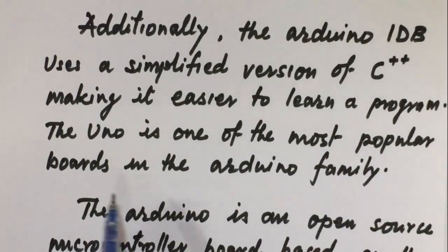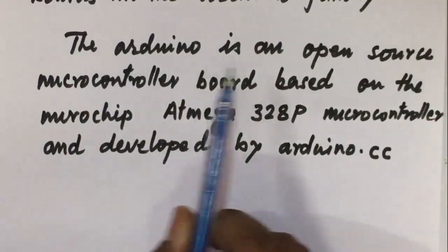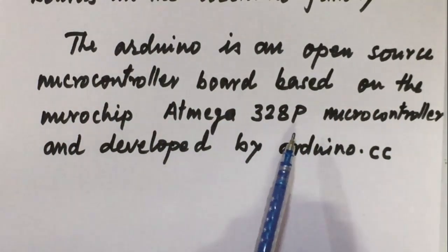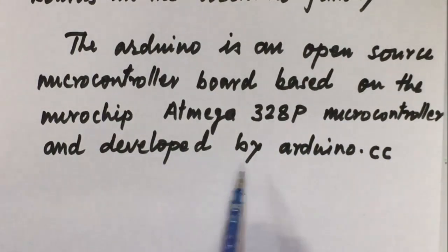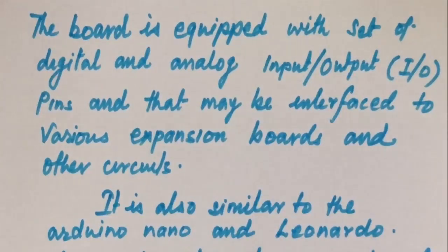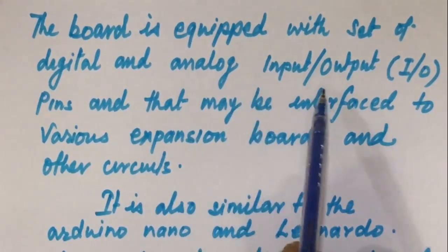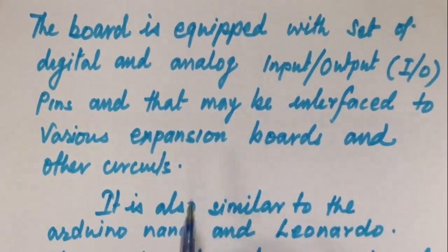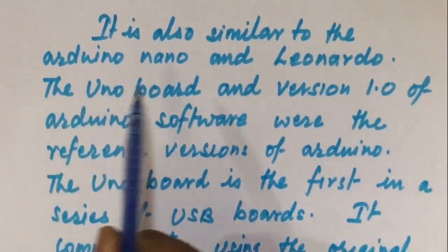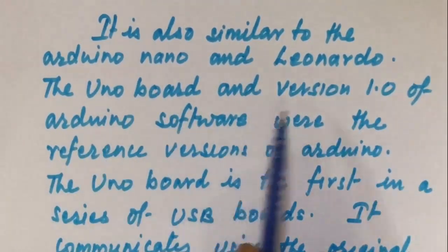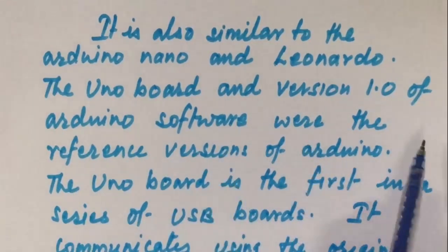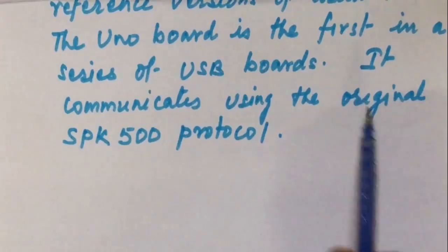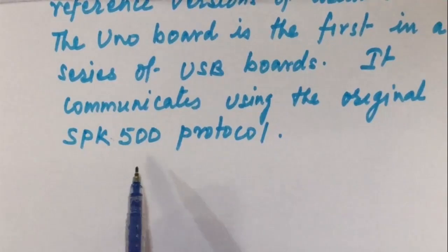The Uno is one of the most popular boards in the Arduino family. The Arduino Uno is an open-source microcontroller board based on the microchip ATmega328P, where P stands for Pico power microcontroller, and developed by Arduino.cc. The board is equipped with a set of digital and analog input-output pins that may be interfaced to various expansion boards and other circuits. It is also similar to the Arduino Nano and Leonardo. The Uno board is the first in a series of USB boards and it communicates using the original STK500 protocol.